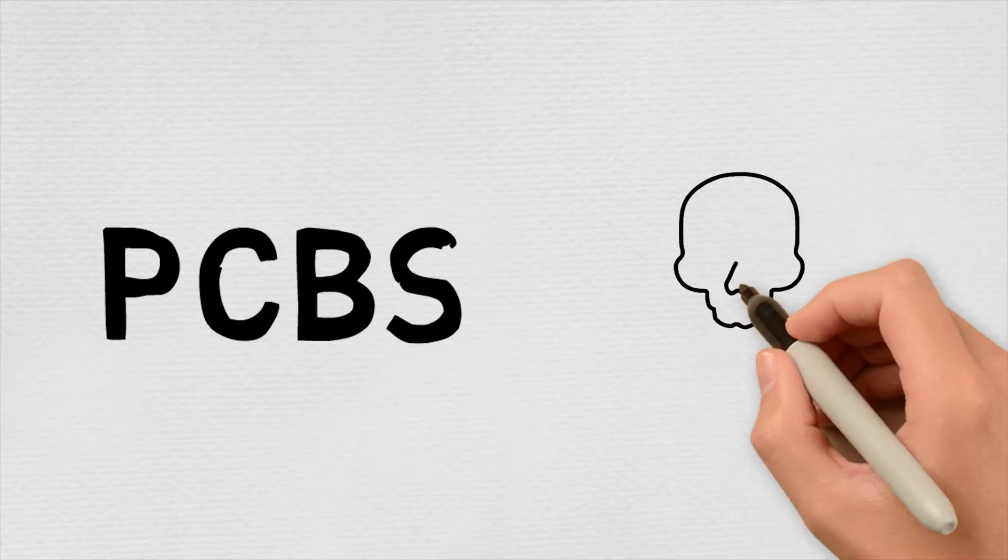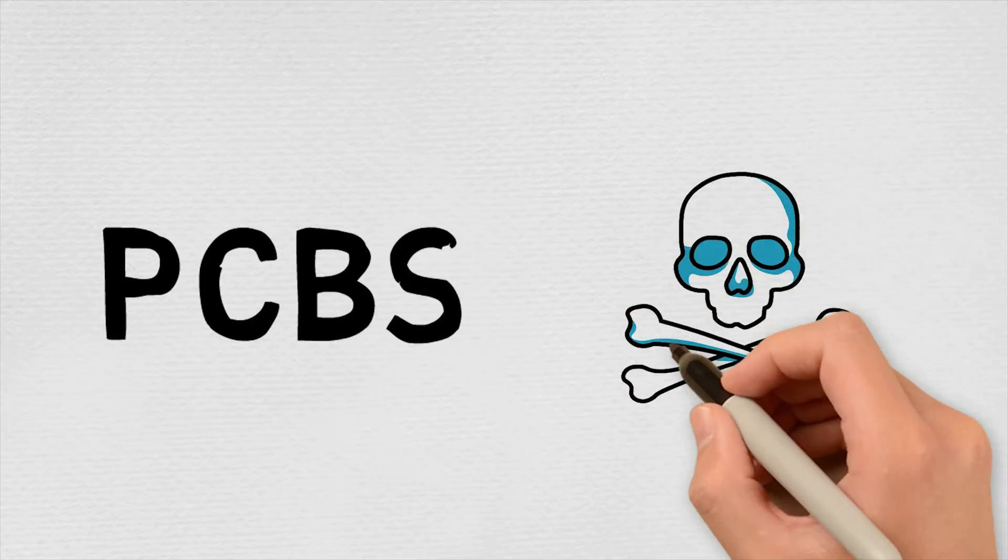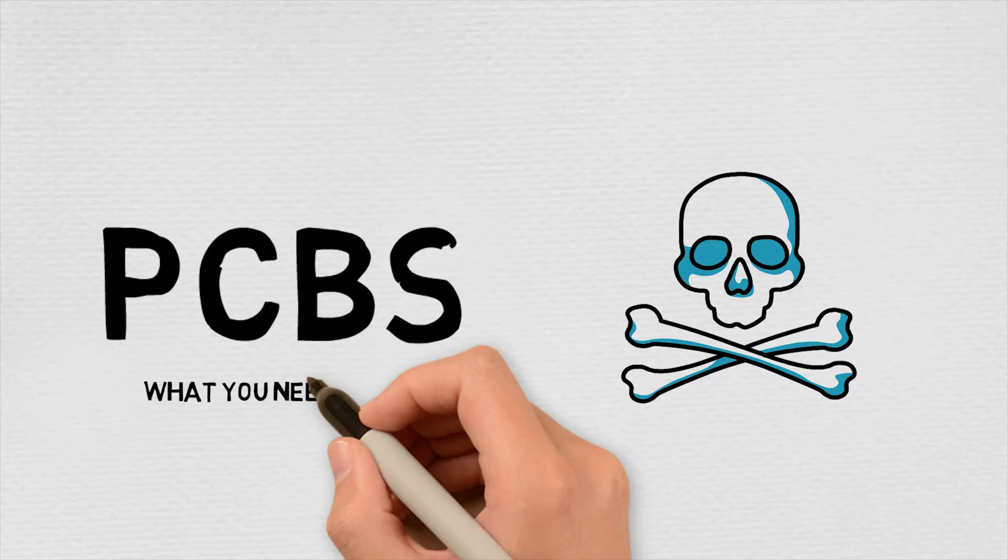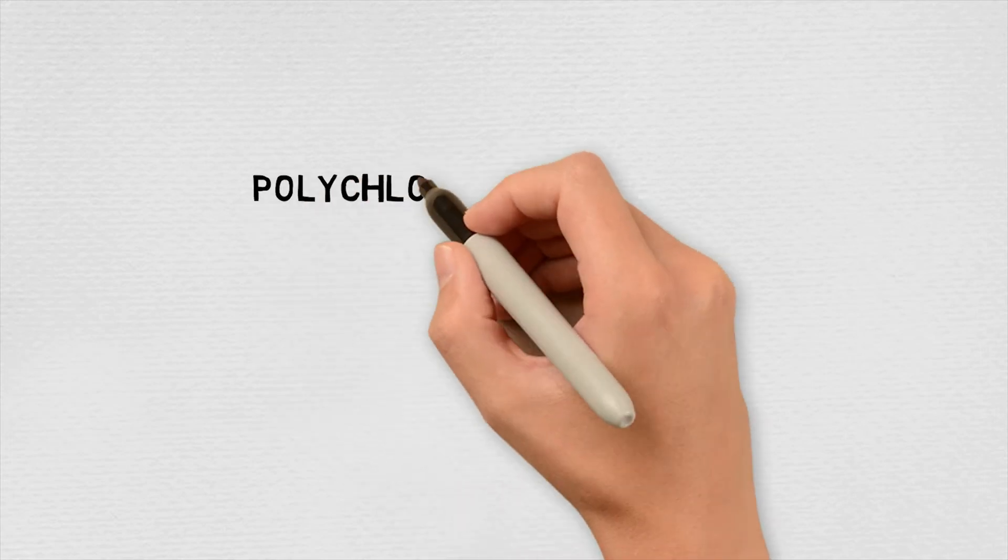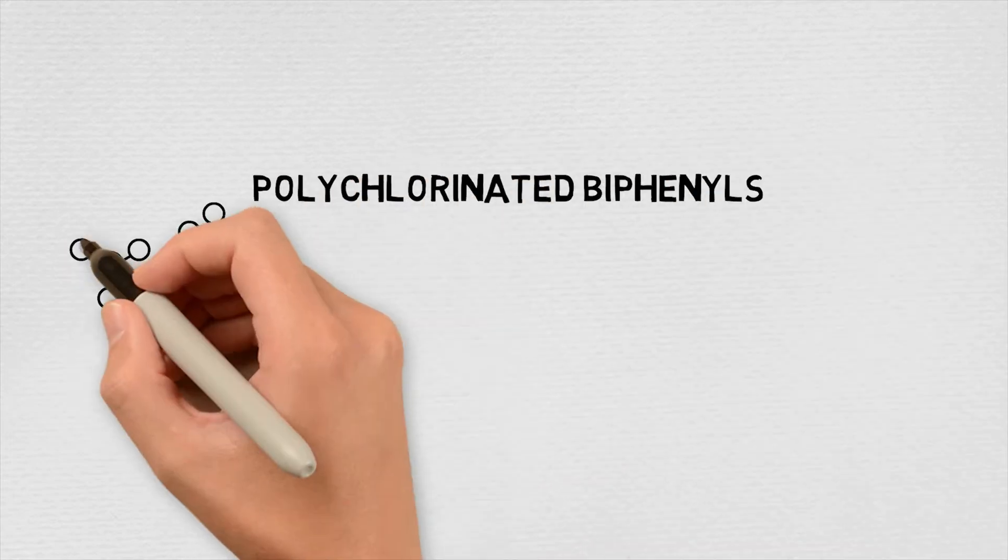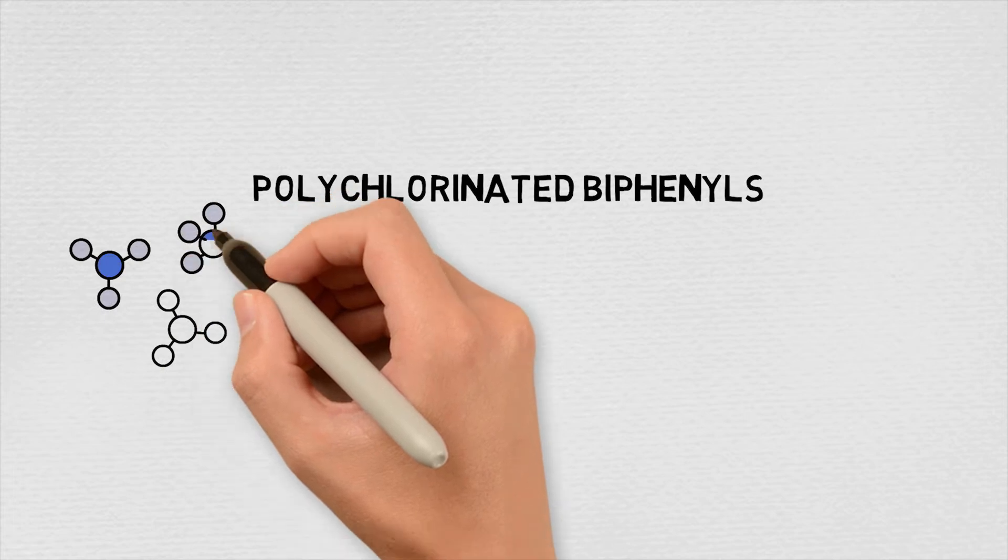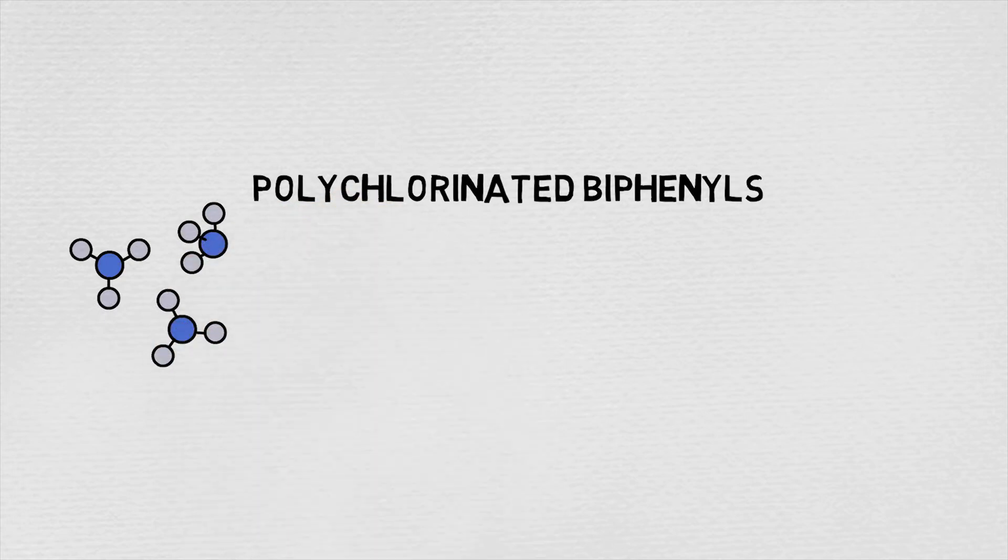PCBs used to be a miracle substance in the building industry, but nowadays they are one of the world's most dangerous pollutants. Find out what you need to know about PCBs. PCBs is an abbreviation and stands for polychlorinated biphenyls. They are a subset of the synthetically or artificially produced organic chemicals called chlorinated aromatic hydrocarbons.